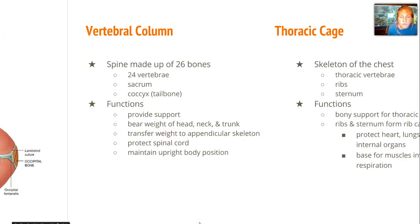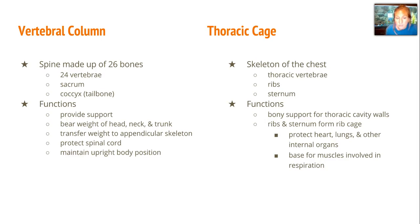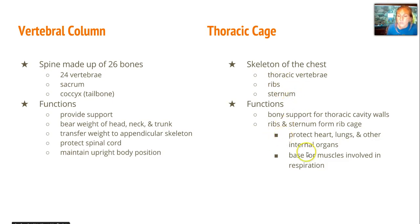The other two parts of the axial skeleton are the vertebral column and the thoracic cage. The vertebral column is made up of 26 bones: the 24 vertebrae, the sacrum, and the coccyx. They support and bear weight, transfer weight, protect the spinal cord, and help us maintain body position whether sitting or standing. The thoracic cage is our chest, containing our ribs, vertebrae, and sternum. It protects our heart and lungs and provides a base for muscles involved with respiration.